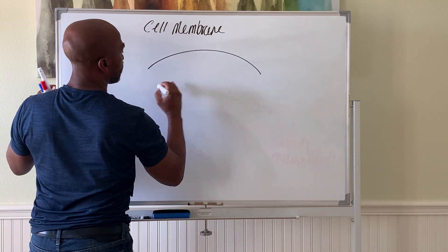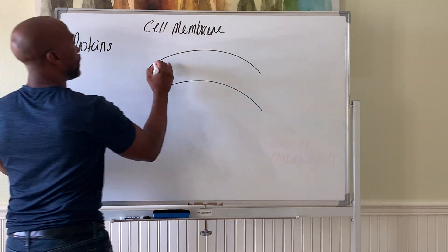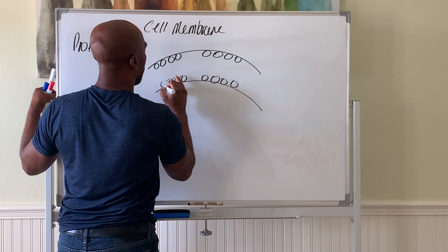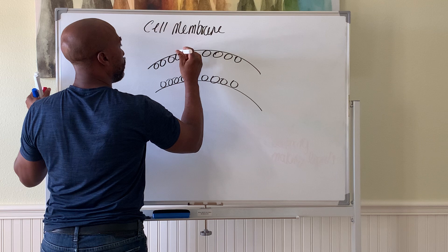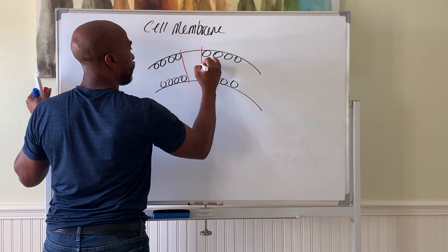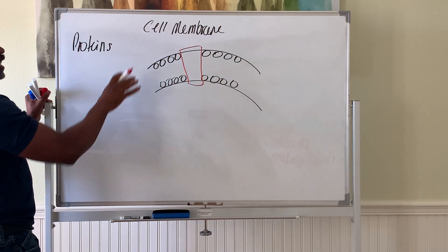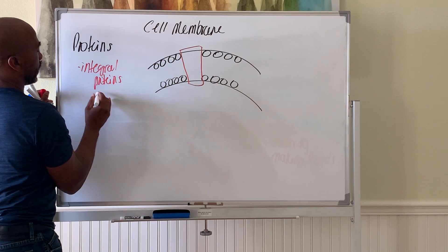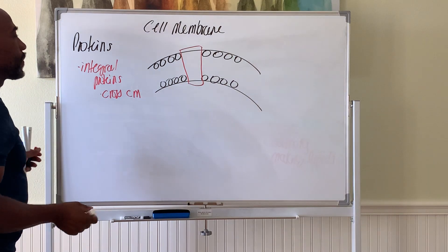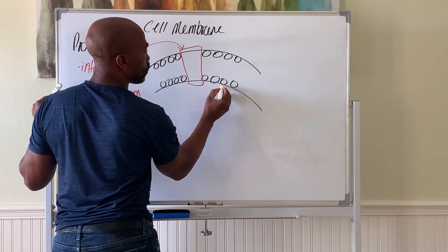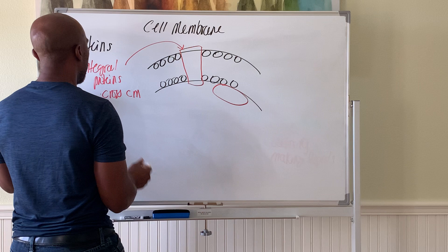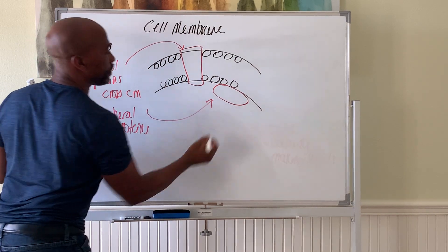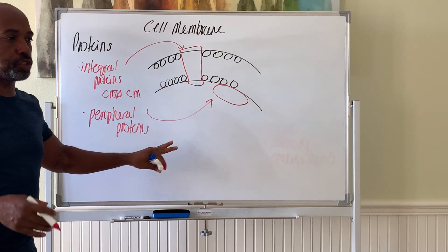Now let's look at proteins that are also part of the cell membrane. The cell membrane is a bilayer of phospholipids, and in parts of it you also have proteins. Some proteins span the entire cell membrane — we call those integral proteins. You also have other proteins which are attached to one side only, usually on the inside of the cell membrane — those are your peripheral proteins.